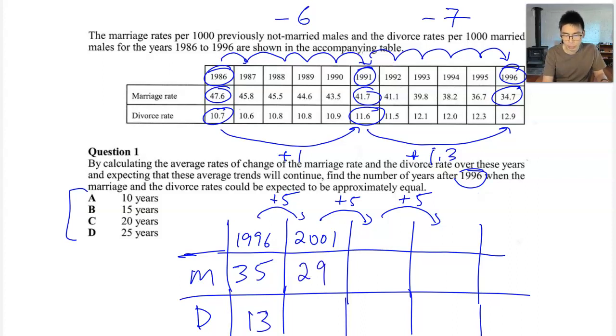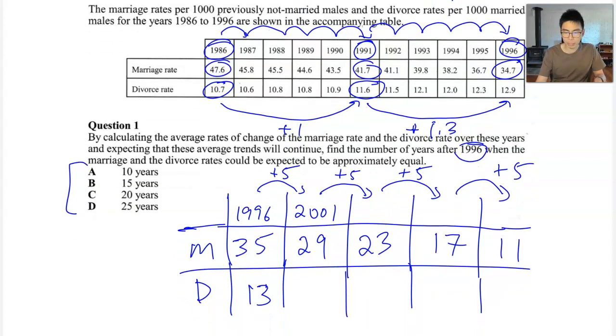Now 35, if we take away six, where are we? We're at 29. If we take away another six, we're going to be at 23. Take away another six, we're going to be at 17. And let's just do another, take away another six, it's going to be 11. So we've gone five years, 10 years, 15 and 20 years in advance. If we have to, we'll jump again. I'll just run out of space on the table.